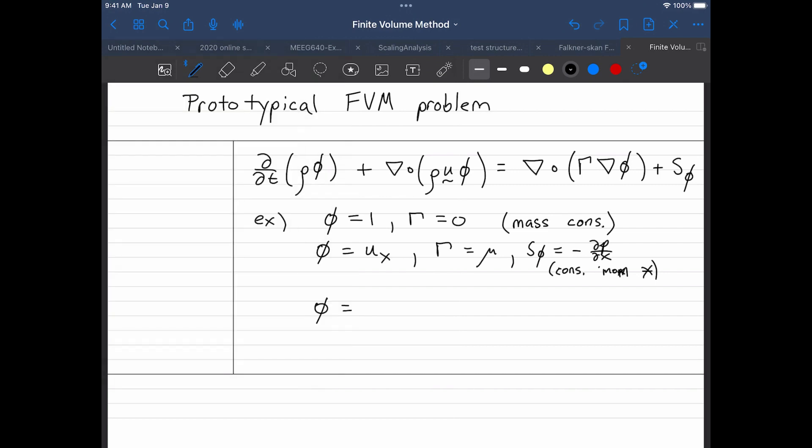So the idea is that you can construct all these equations by choosing the right value of phi and gamma. So in the energy equation, that would be cv times temperature. And then the diffusivity would be defined as k over cv. And you could have a source term that included volumetric heat generation. So we could reconstruct the energy equation that way.